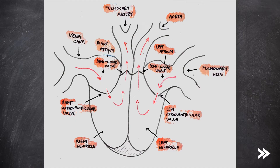On the other side, oxygenated blood enters the heart via the pulmonary vein. It first enters the left atrium, is forced through the left atrioventricular valve into the left ventricle, and then passes into the aorta via the left semilunar valve.